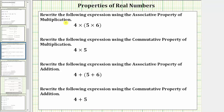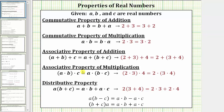We are asked to rewrite the following expression using the associative property of multiplication. We are given the expression four times the quantity five times six. The associative property of multiplication is the quantity A times B times C equals A times the quantity B times C.